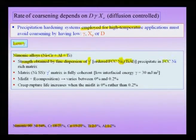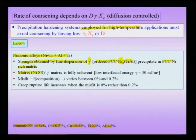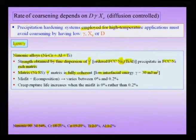The ordered γ' precipitate sits in an FCC nickel-rich matrix with other alloying elements. Since the structure is ordered, it has a larger Burgers vector and is harder, giving a higher Peierls stress and hardness. Crucially, the interface between the matrix and γ' is fully coherent with a very low interfacial energy of about 30 mJ/m². This low γ means low tendency to coarsen — the key strategy to avoid coarsening at high temperatures.